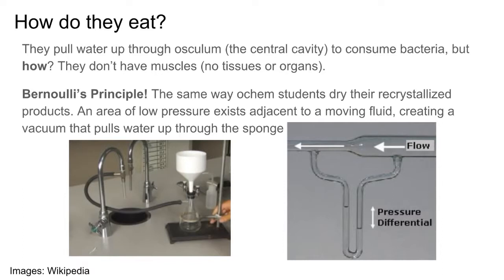This leads to the question: how do sponges eat if they don't move? The way they do this is very interesting, especially from a chemical engineering background where I'm fascinated by the design of things. Sponges have something called an osculum — a central cavity that water is pulled up through. But how is water actively pulled through this osculum if sponges don't have musculoskeletal systems to pump the water?